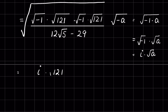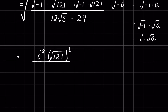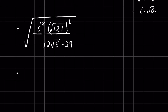So √(-1) × √(-1) = i², and the expression becomes i² × (√121)² divided by (12√5 - 29), all under a square root. Since i² = -1, this becomes -1 × (√121)². We can remove the square root with the square, giving us -121.